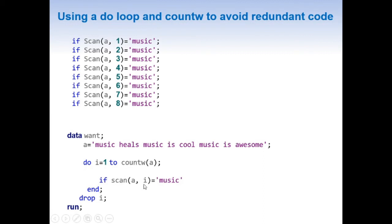When i is 2, then we are extracting the second word and comparing to the music. Instead of doing this one by one, we are pretty much doing the same thing in a DO loop.